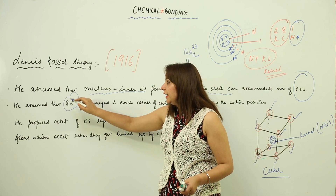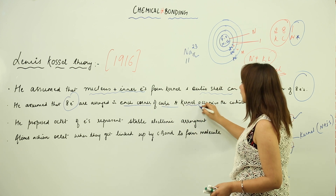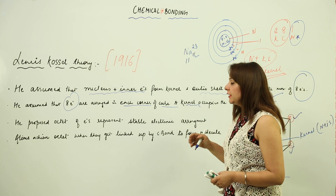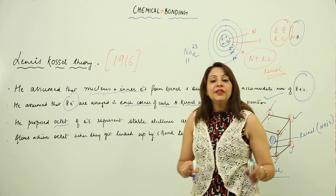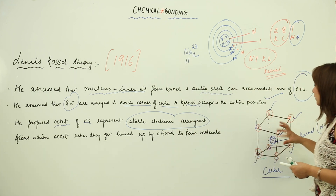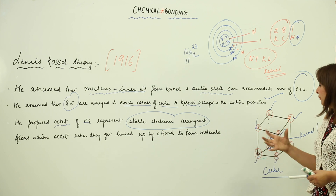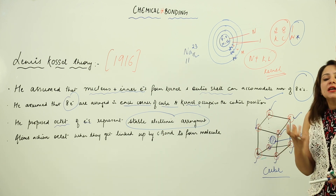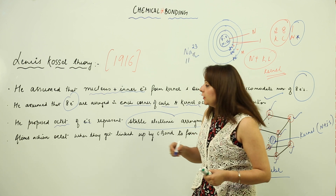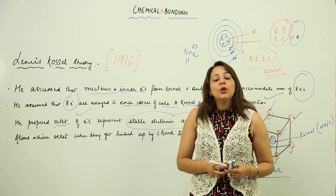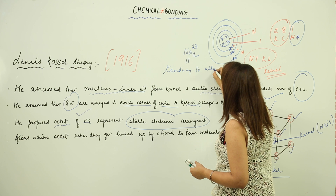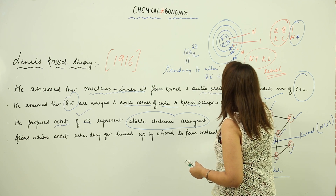He said the eight electrons are arranged at each corner of the cube, and the kernel occupies the central position. He stated that having eight electrons in the outermost shell — called an octet — represents a stable electronic arrangement. When all corners are filled with electrons, the structure achieves a stable electronic configuration. So in order to attain stability, an atom needs to achieve the octet, which means the tendency to attain eight electrons in the outermost shell.